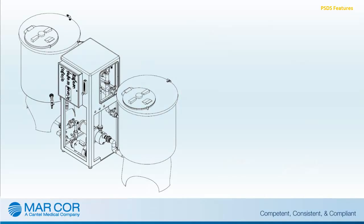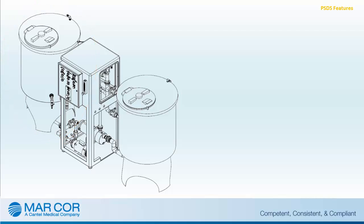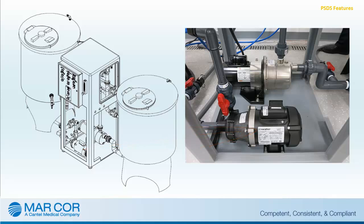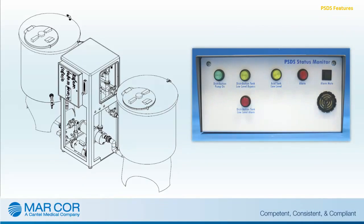The pressurized solution distribution system is provided with a 100-gallon distribution tank used for distributing the mixed bicarb solution. The one-third horsepower distribution pump provides quiet and reliable distribution of solution to the patient stations. A remote monitor indicates the operational status of the PSDS system.